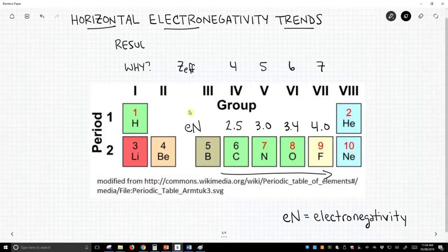What is the result of this trend? One thing we see is that the van der Waals radius of these elements decreases as we go across the periodic table.